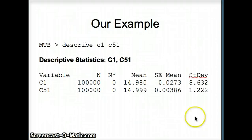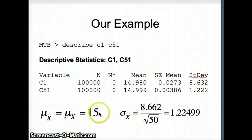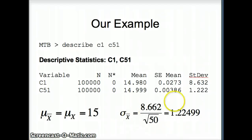Looking at our numbers: the underlying mean was about 14.98, the mean of the means was 14.999 — very close to 15. The underlying standard deviation was 8.632, not far from what we had with 10 million numbers. The standard deviation of the means was 1.222. We expected the average of averages to be 15 — we have 14.999. We expected the standard deviation of averages to be 1.22499 — we have 1.222. Fairly good.